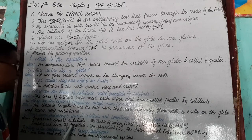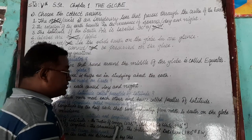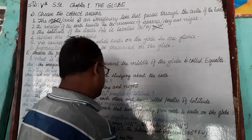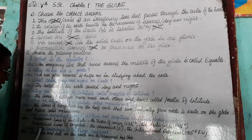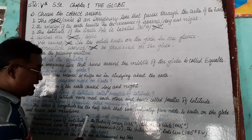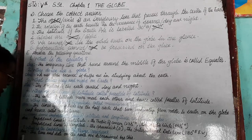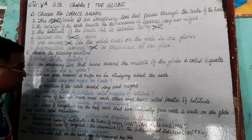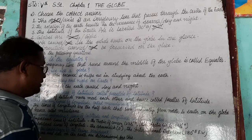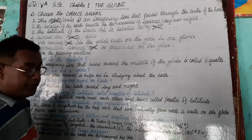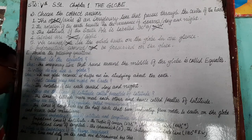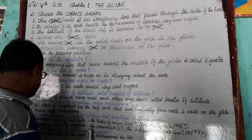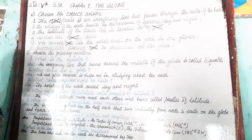Important lines of longitude: the Greenwich Meridian at 0 degrees, and the International Date Line at 180 degrees. Next question: What is the importance of the prime meridian? The time and date on the earth are determined by the prime meridian.